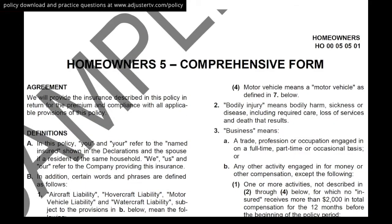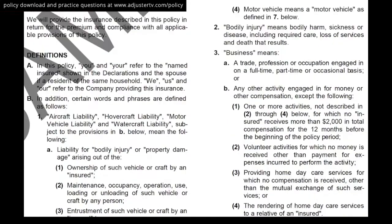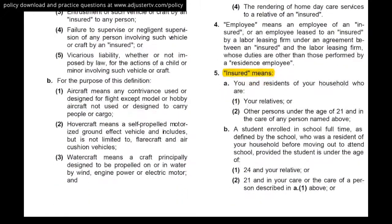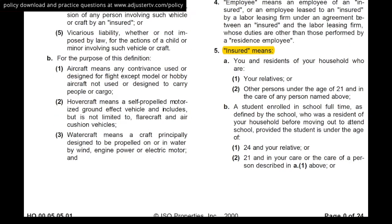Going a bit deeper into the definitions section, what we're mainly concerned about is who the insured is. In this case it says you and residents of your household who are your relatives, or other persons under the age of 21 in the care of any person named above. Under certain circumstances — if the insured is deceased or they have a public adjuster — you're going to need a signed power of attorney to deal with anybody who is not a named insured or described in this section.